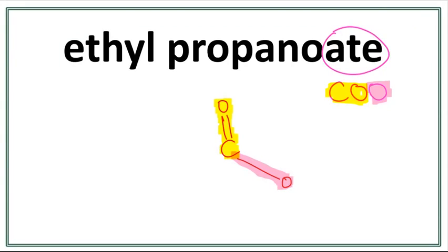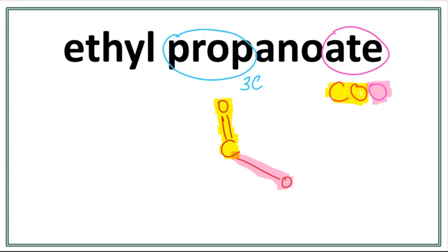Let's work on the parent chain. This 'prop' right here tells us that there are three carbons in the parent chain. The trick to draw this is that you always count till one less than the number of carbons you want to draw, and the parent chain always attaches with the carbon in the COO group. So we count one, two.